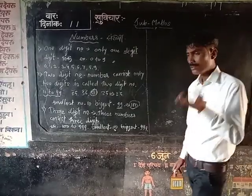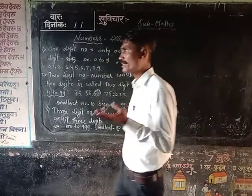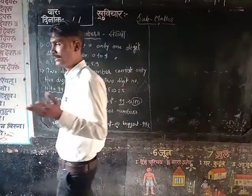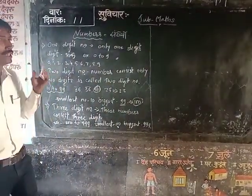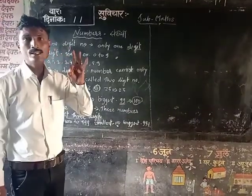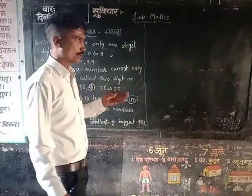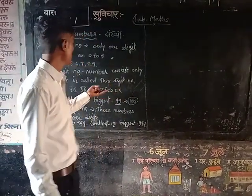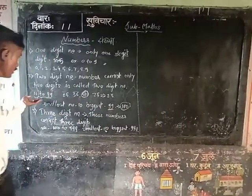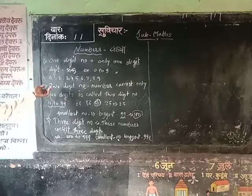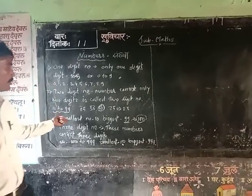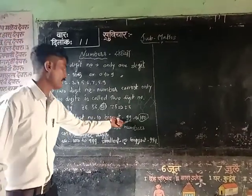And the number 100 consists of 3 digits: 1, 0, 0. So these are 3 digits. In the section of 2-digit numbers, the biggest number is 99.